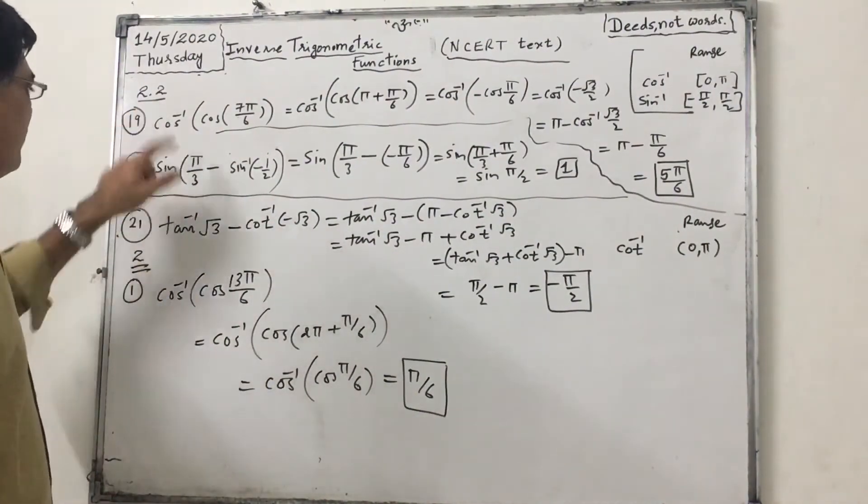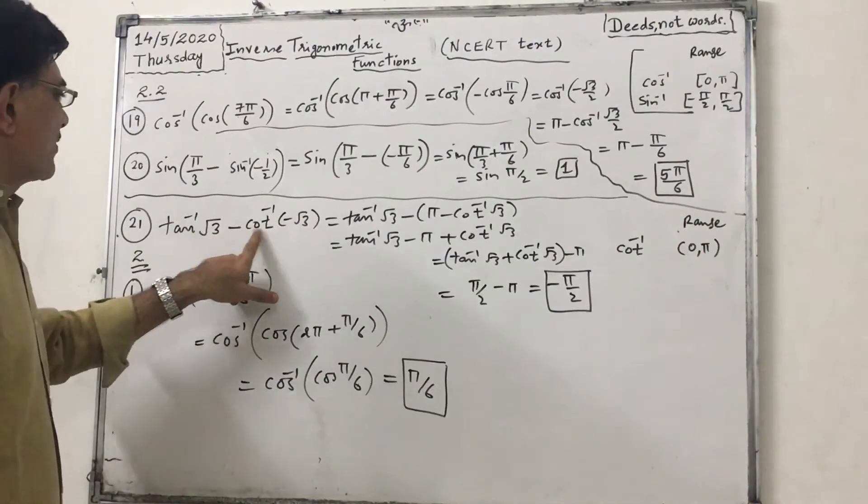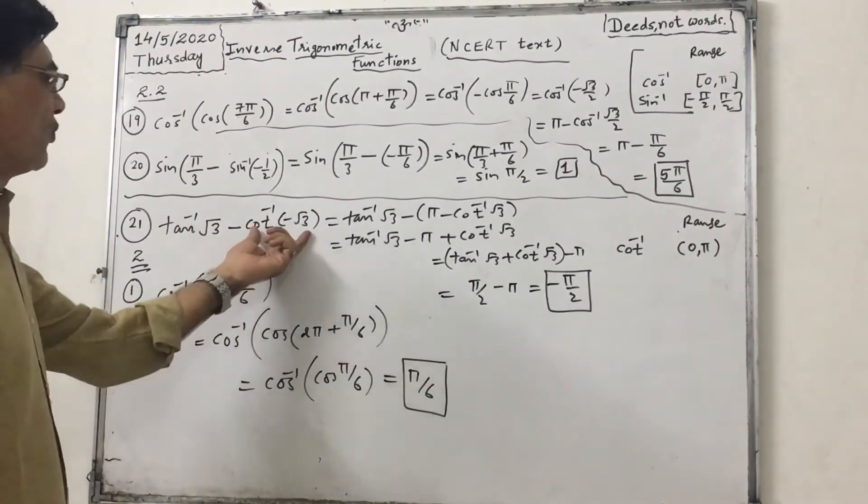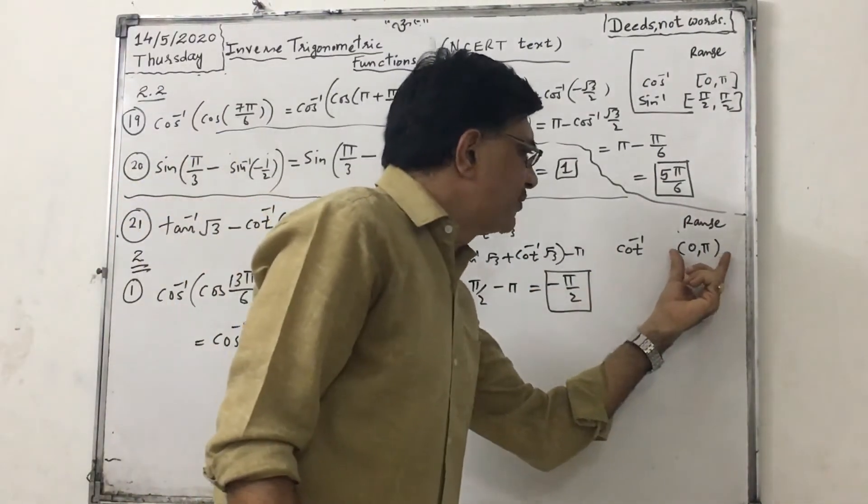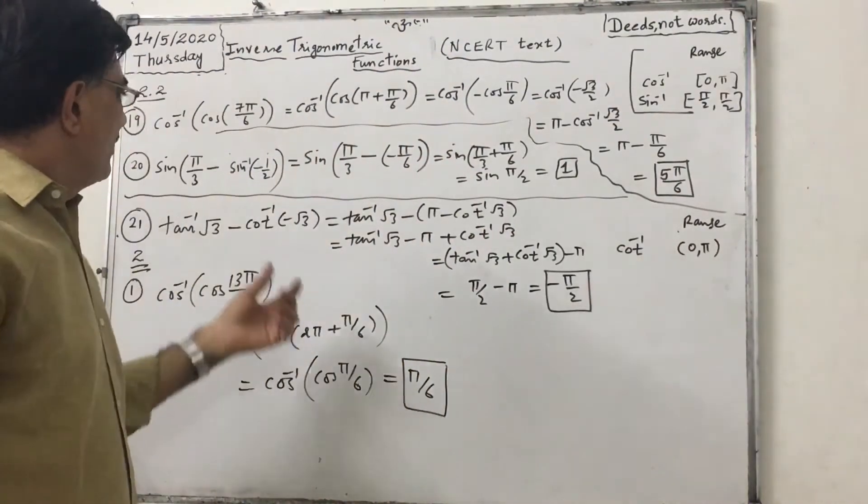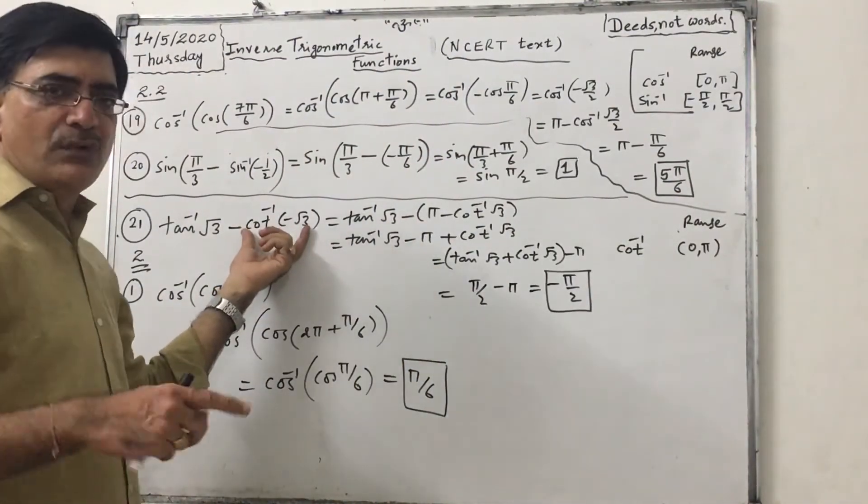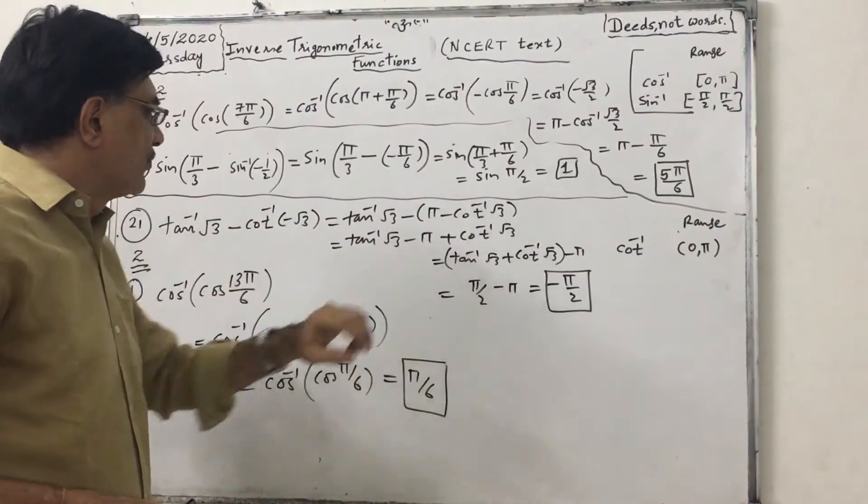Now 21st of 2.2. tan inverse of root 3 minus cot inverse of minus root 3. What is range of cot inverse? It is open interval 0 to π. So we have to consider this in second quadrant.